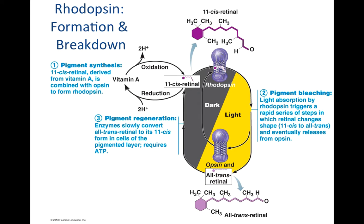Hi everybody. I wanted to hopefully clear up some confusion on the function of photoreceptors and phototransduction. So a quick reminder, we are looking at photopigments or visual pigments. This consists of, in rods, retinal and opsin, which is the protein aspect. Retinal is going to be responsible for absorbing that wavelength of light. And as you can see here, it's a part of a redox reaction.